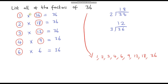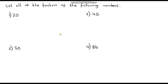Notice how the factors always come in pairs. So the easiest way to identify all of the factors is by starting at 1 and working your way down until you come back on yourself — that will guarantee that you get all of the factors. Okay so pause the video — I've got 4 more for you to have a go at. List all of the factors of the following numbers.